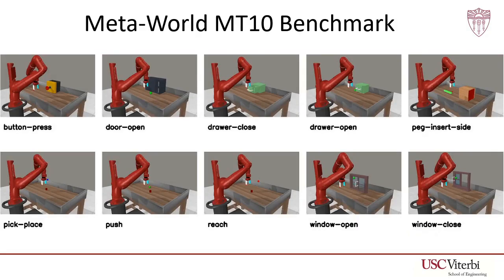We chose to focus on the MetaWorld MT-10 benchmark, which contains 10 tasks, each of which randomize the positions of goals and object locations every episode. Furthermore, we seek a method that achieves a minimum level of performance in each task, a much more difficult objective than reaching an average level of performance across all tasks.